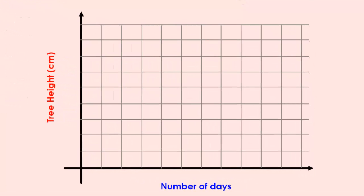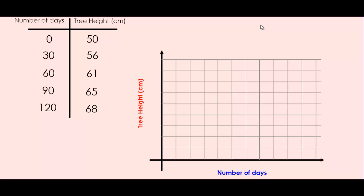Next, we need to determine an appropriate scale to put on each axis. Let's look at the range of numbers for each variable. For the number of days, the range goes from 0 to 120. We can count 11 different grid lines along the x-axis. So to decide an appropriate scale, we want to find a number that can fit the entire range of the number of days.